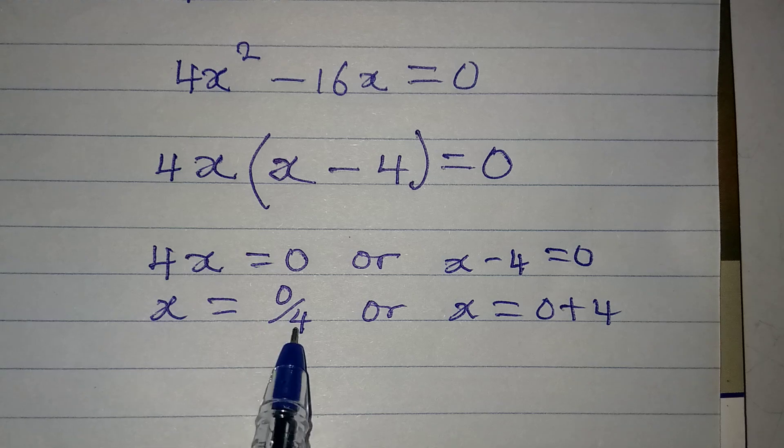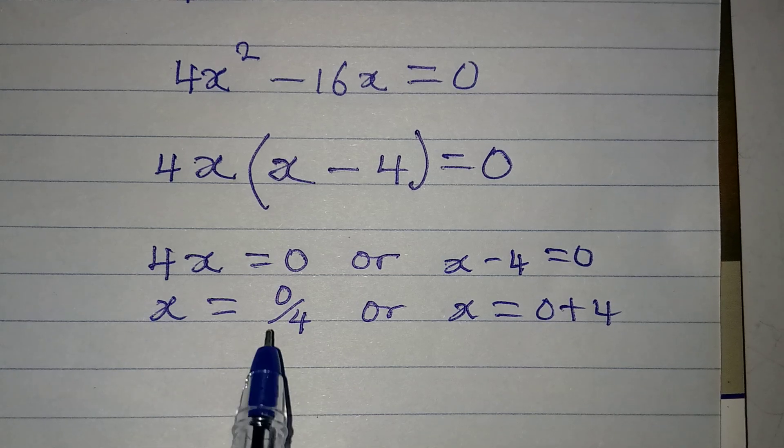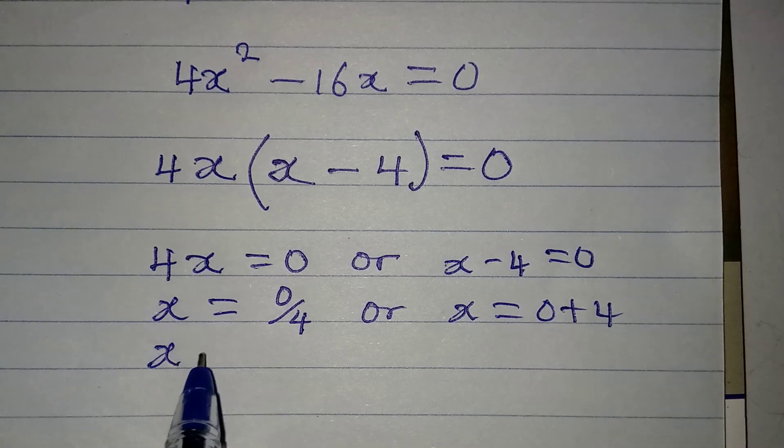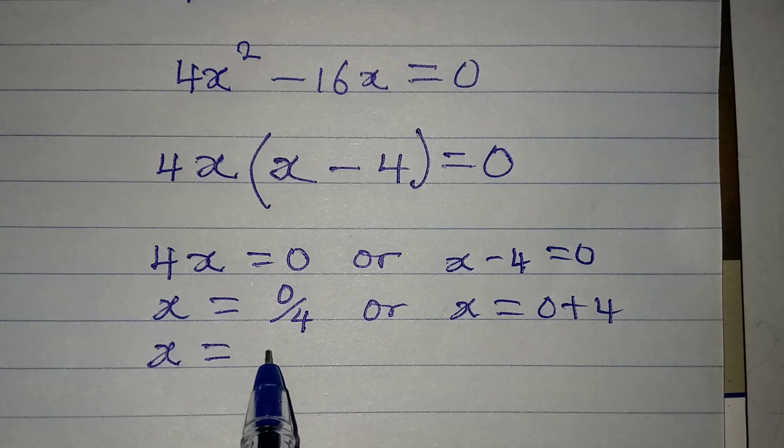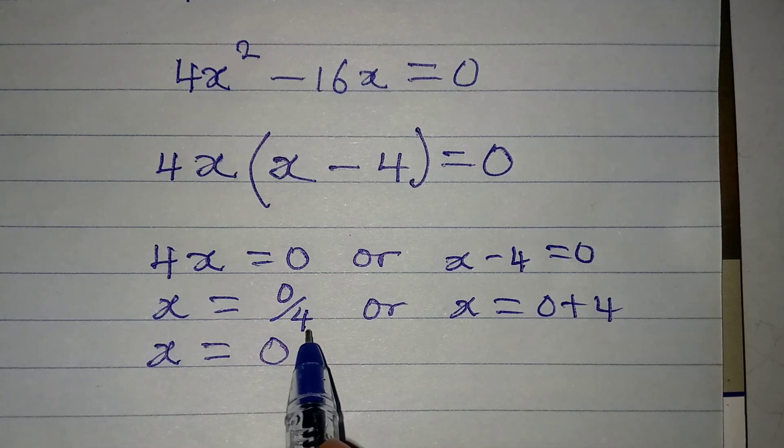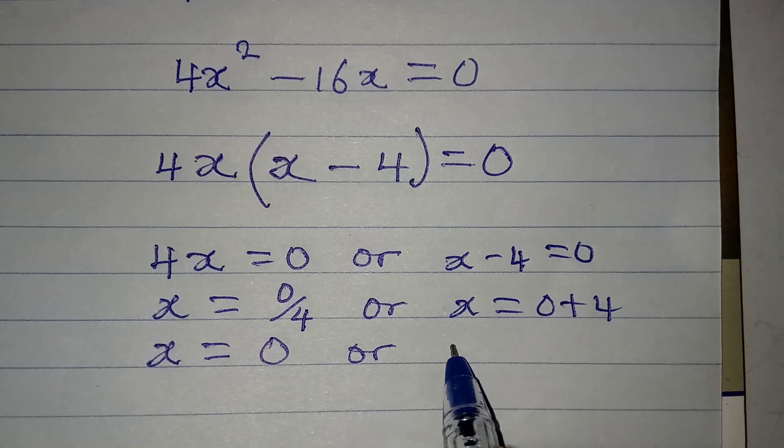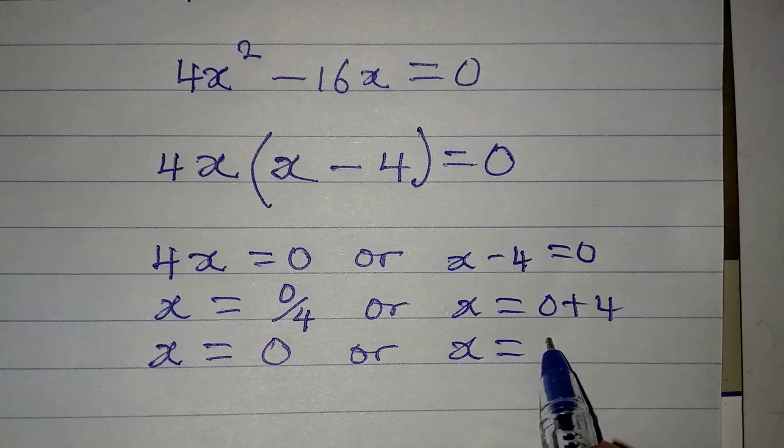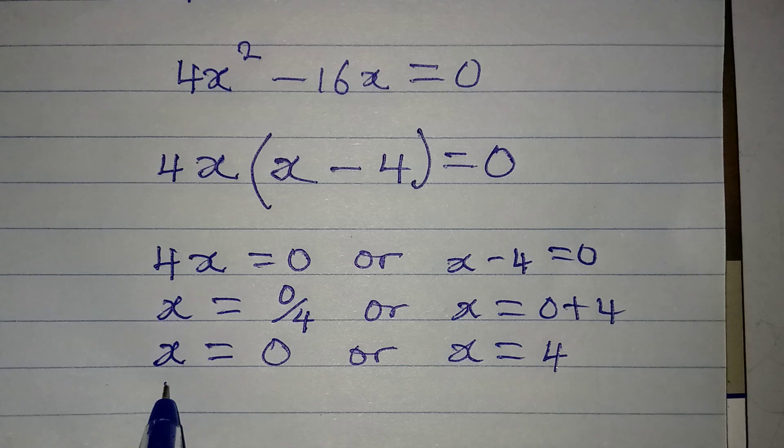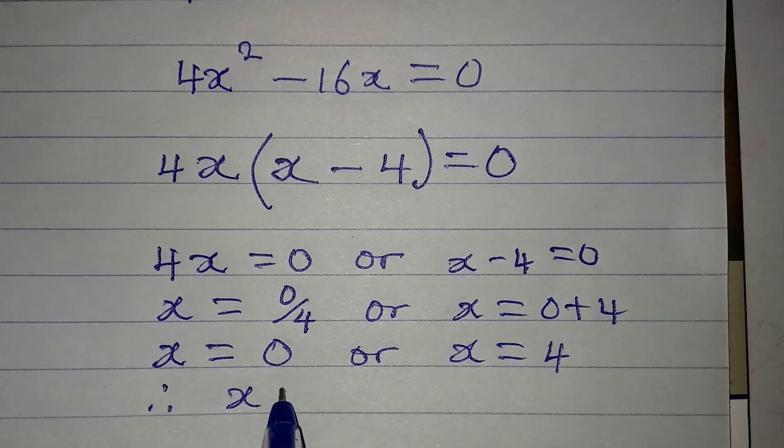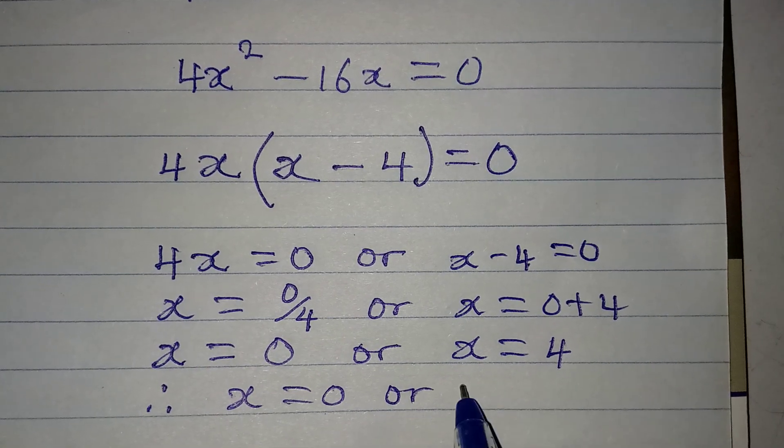But, if you have 4 over 0, it's going to be undefined. So, we can equally get the value of x for here, which will be 0. 0 over 4 is 0. Or, on this side, x will be 0 plus 4 and that will give 0. Therefore, x is equal to 0 or 4.